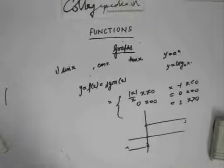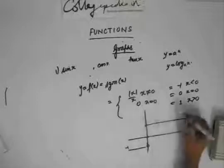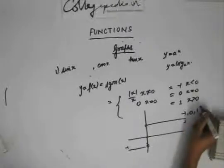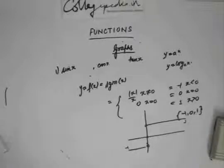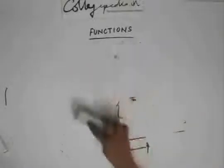The domain of the signum function is the set of all real numbers. The range consists of only three discrete values: minus 1, 0, and 1. These are the only values the signum function can take. So we've discussed the graphs of common functions — now let's move on to the classification of functions.